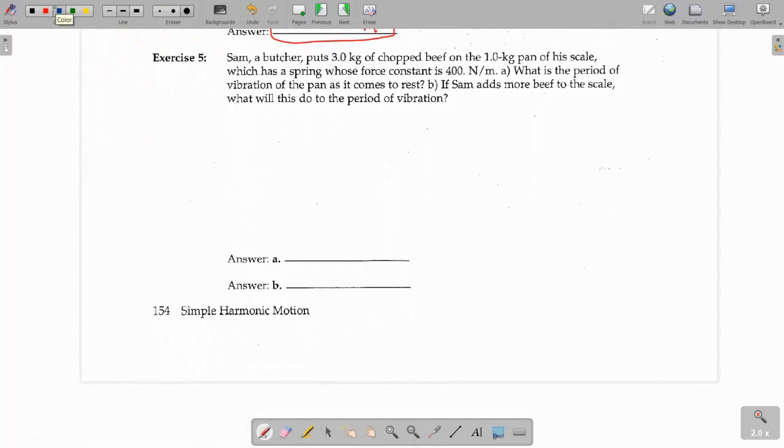Number 5 says, Sam, a butcher, puts 3 kilograms of chopped beef on a 1 kilogram pan, so we'll need to keep that in mind, of his scale, which has a spring whose force constant, or spring constant, is 400 newtons per meter. So, you've got to think here, because it's given us two masses, but he put the meat in the pan, which is on top of the scale. So, you're going to combine those two masses, and we're going to go ahead and write 4 kilograms here. And then the spring constant is 400 newtons per meter.